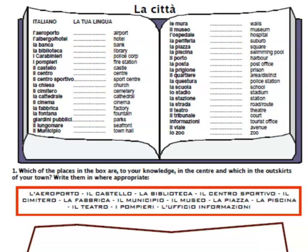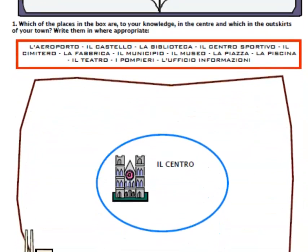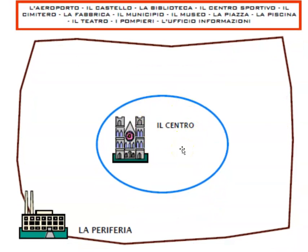If you went on to this section, the top part was just vocab, giving you some words we hadn't practiced before — things like l'aeroporto, l'albergo, and further down i pompieri for the fire station. You had to put places in categories according to which are in the center and which are in the outskirts of your town. To run through quickly: l'aeroporto is the airport, then the castle, the library, the sports center, the cemetery, the factory, the town hall, the museum, the square, the pool, the theater, the fire station and the tourist information office. If you wanted them in the center, they go under il centro; the word for outskirts is la periferia.